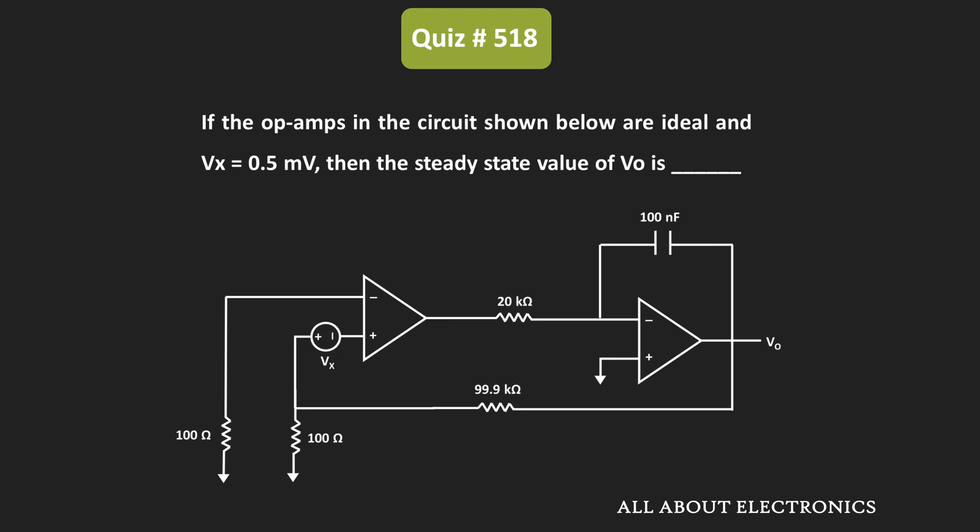Moreover, here we have also been given that the value of Vx is equal to 0.5 mV. So, here in the steady state condition, we have been asked to find the value of the output voltage.